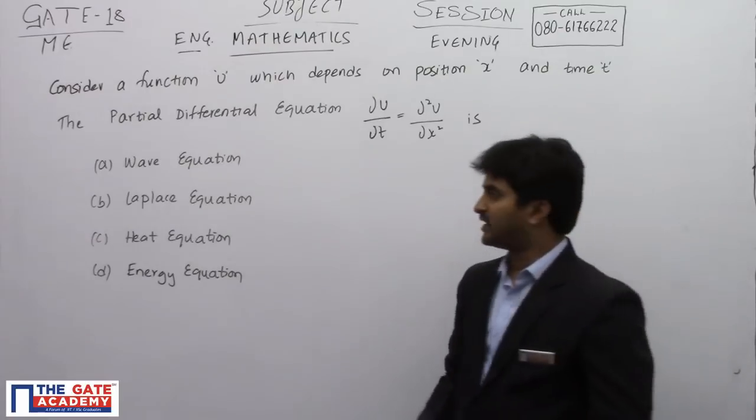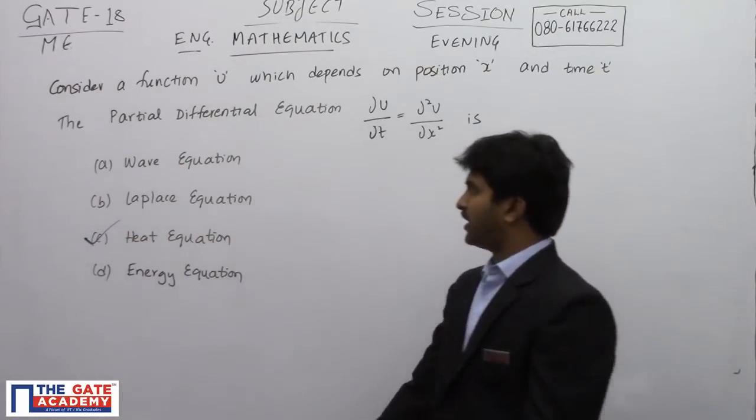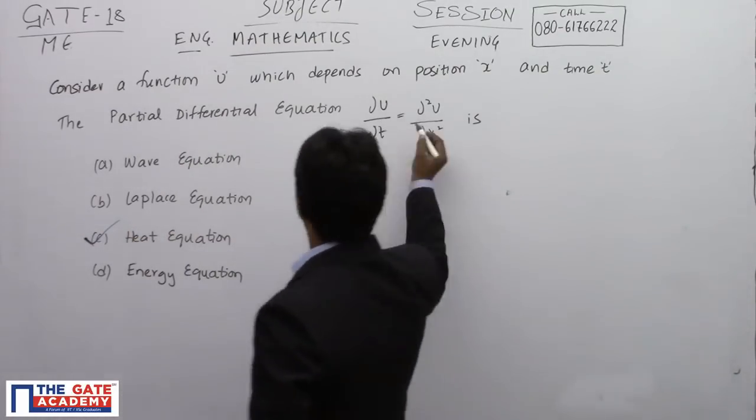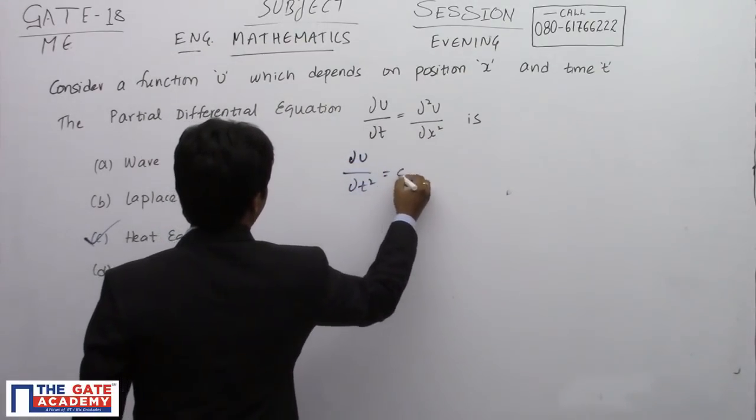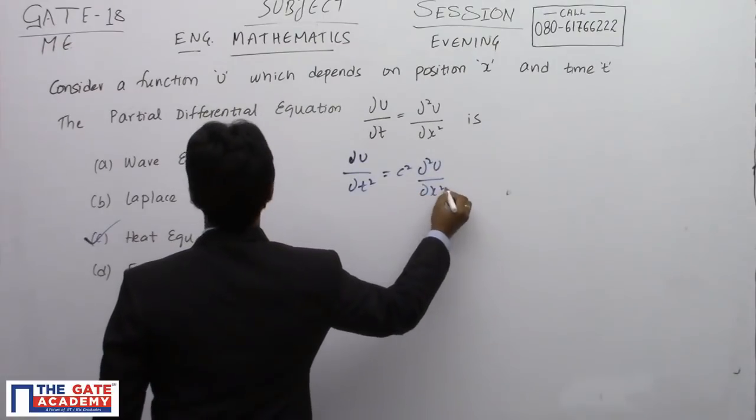So, the answer for this particular question is heat equation. Okay, wave equation is going to have a double derivative on both sides. Generally students think it is going to be a wave equation, but actually the wave equation is going to be something like this.